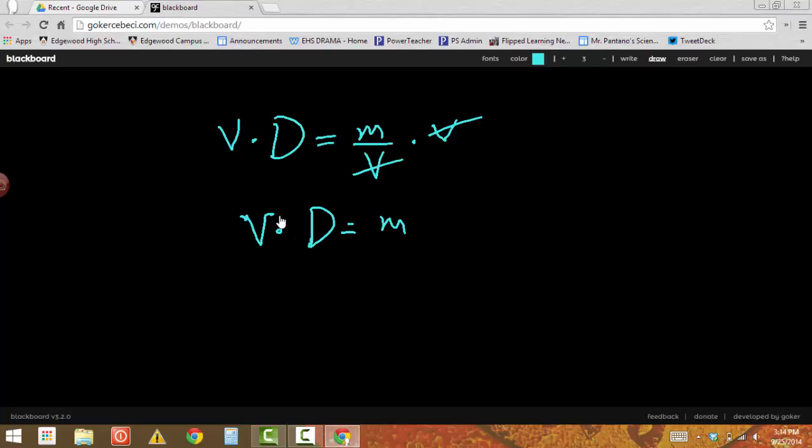Now, if I want to get V by itself, then I have to divide both sides by density. And so I get volume is equal to mass over density. So I can now use this relationship to solve problems for volume.